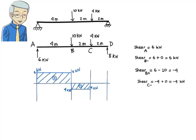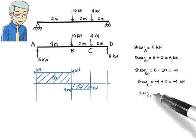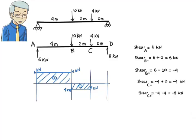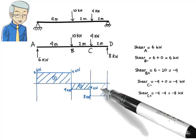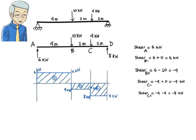Shear just to the left of point C is negative 4. Given that there is a downward force of 4 kN at C, shear just to the right of the point is negative 4 minus 4, or negative 8. That is, there is a drop of 4 in shear value right at point C. Similar to the other two segments, total load applied within segment CD is 0. Therefore, shear remains constant throughout the segment — shear remains negative 8 in segment CD.